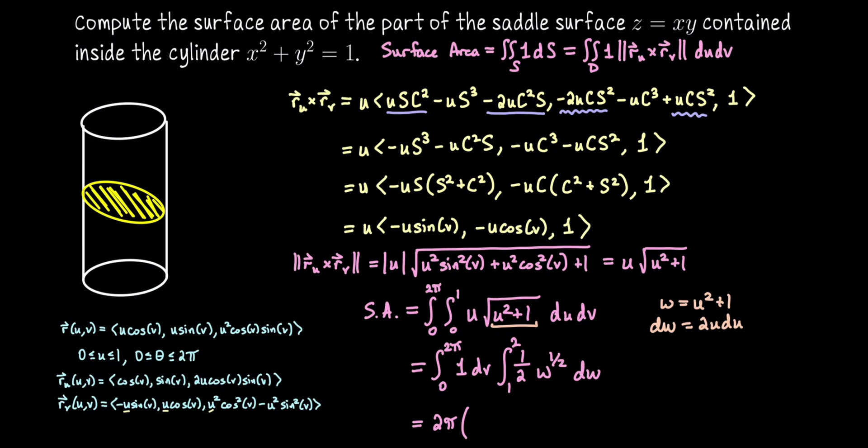Now if I anti-differentiate w to the 1 half, I get w to the 3 halves. I want that 3 halves to come down, cancel out with something to leave me 1 half. So I think I should have a leading 1 third. Now we need to evaluate that from 1 to 2. Okay, what I'm going to do as well is pull that 1 third out and write the final answer as 2 pi over 3 times 2 to the 3 halves. So that's 2 squared times 2 to the 1 half. We can write 2 square root of 2 minus 1 to the 3 halves, which is 1. So that is the surface area of the saddle surface trapped inside of the cylinder of radius 1.